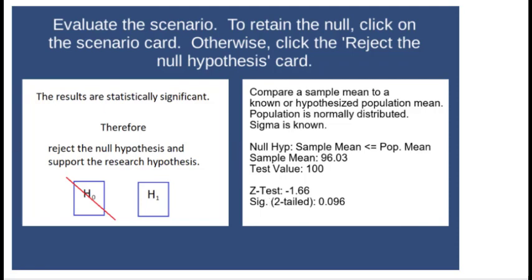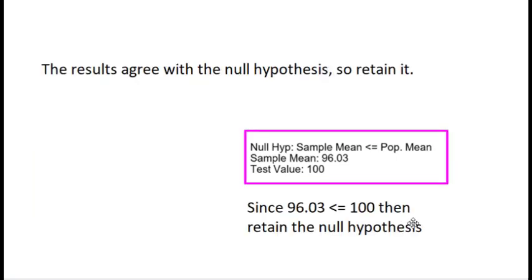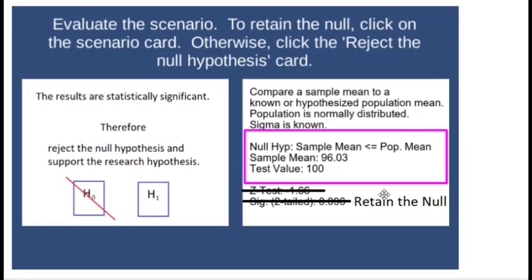Now, focusing on the null hypothesis, it says that the sample mean should be less than or equal to the population mean. First thing, is the evidence consistent with the null hypothesis? Because if it is, we're just going to keep the null hypothesis. And in this case, it truly is. A sample mean of 96.03 is less than or equal to the population mean of 100. So we would retain the null. We don't even look at the statistics.